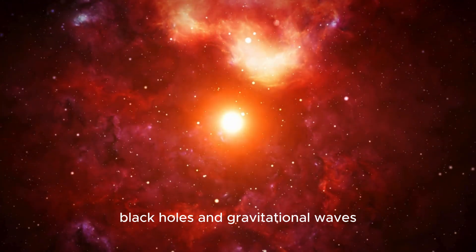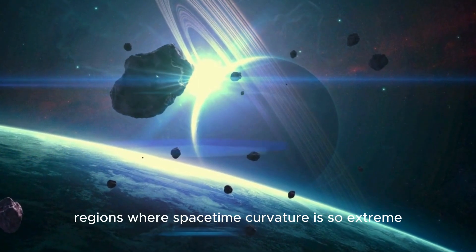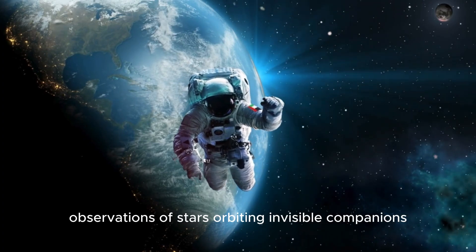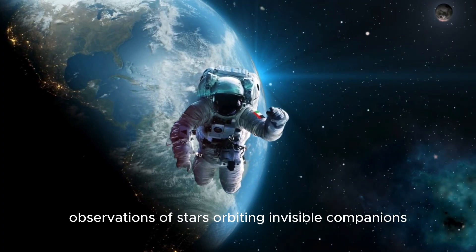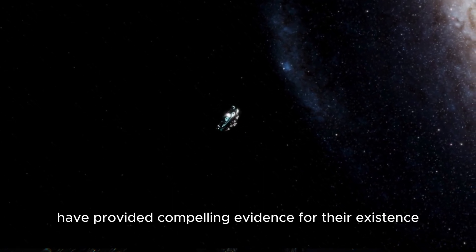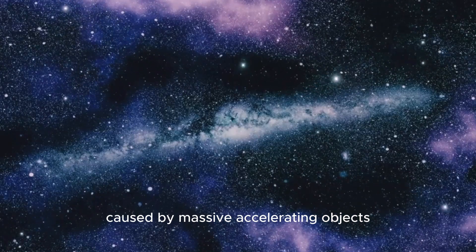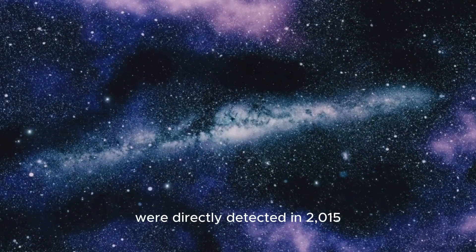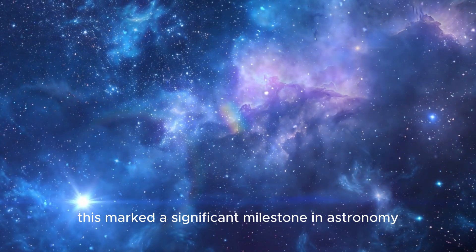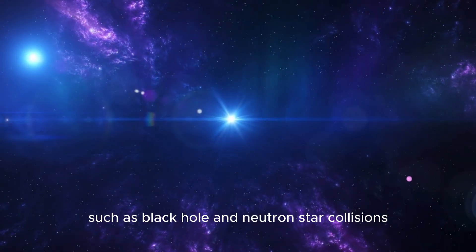Black holes and gravitational waves. General relativity also predicts the existence of black holes, regions where spacetime curvature is so extreme that nothing, not even light, can escape. Observations of stars orbiting invisible companions and the detection of gravitational waves have provided compelling evidence for their existence. Gravitational waves, ripples in spacetime caused by massive accelerating objects, were directly detected in 2015 using advanced instruments like LIGO and Virgo. This marked a significant milestone in astronomy, opening a new window for studying phenomena such as black hole and neutron star collisions.